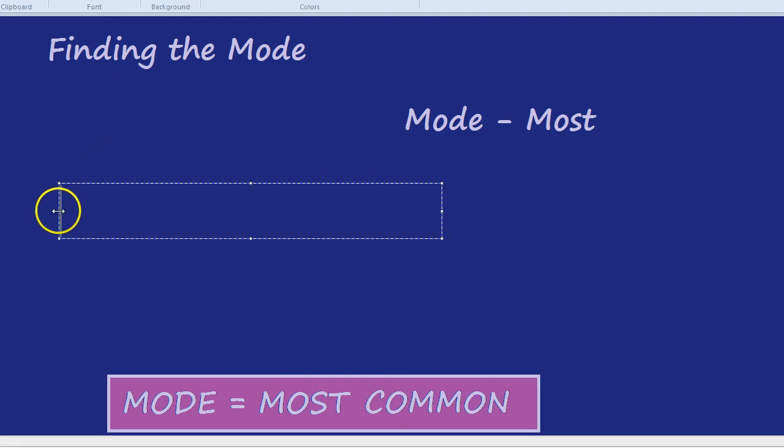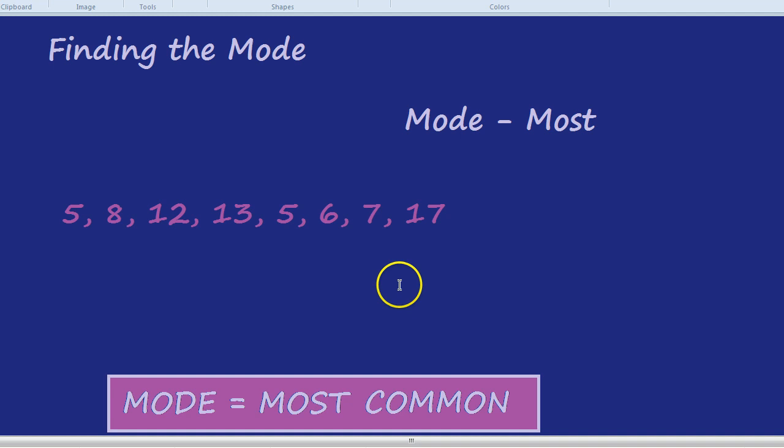How about a group of numbers like 5, 8, 12, 13, 5, 6, and let's do a few more - 7 and 17. Which number is the mode?